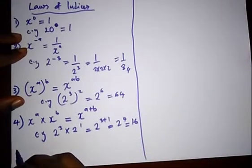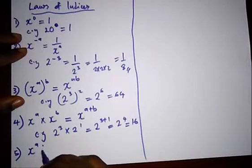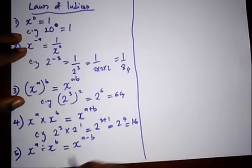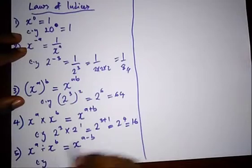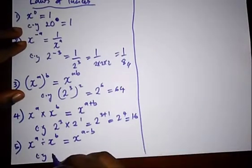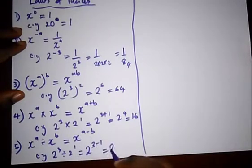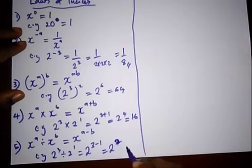Another law: when you have the same base dividing itself but with different powers, you simply keep that base and subtract the powers. For example, two raised to the power three divided by two raised to the power one gives two raised to the power three minus one, which is two raised to the power two, equal to four.